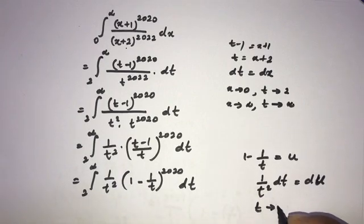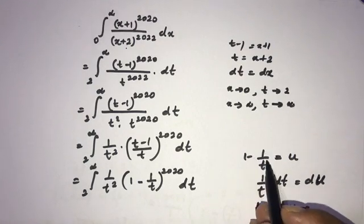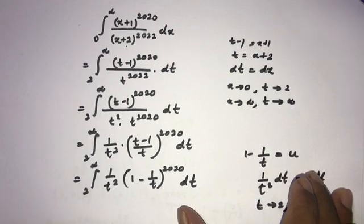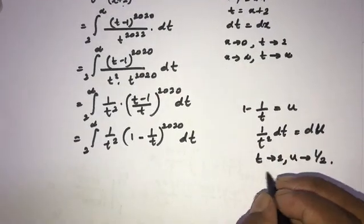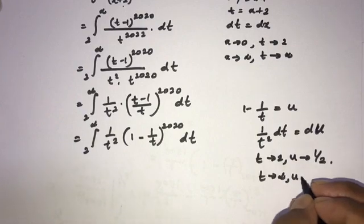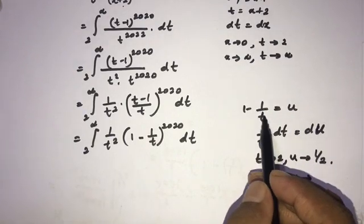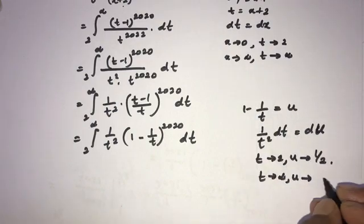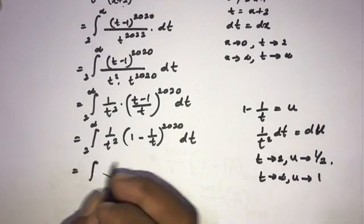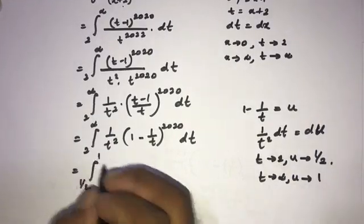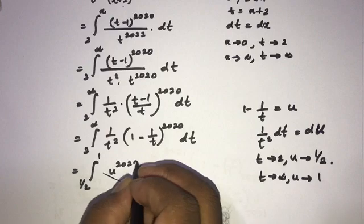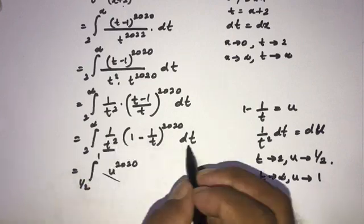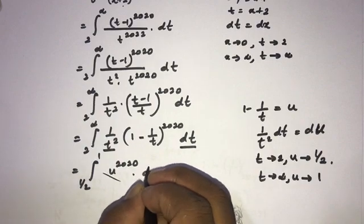Now we change the limits. When t = 2, u = 1 - 1/2 = 1/2. When t approaches infinity, 1/t approaches 0, so u approaches 1. Our integral becomes the integral from 1/2 to 1 of u^2020 du.